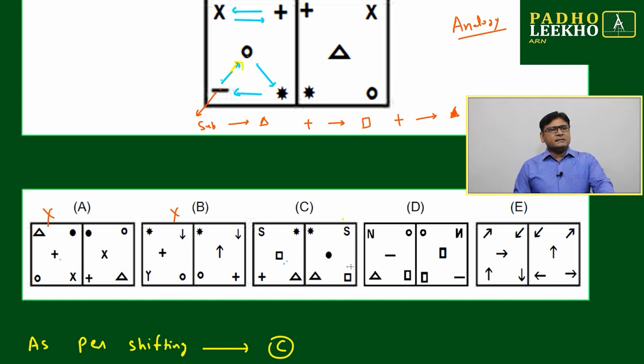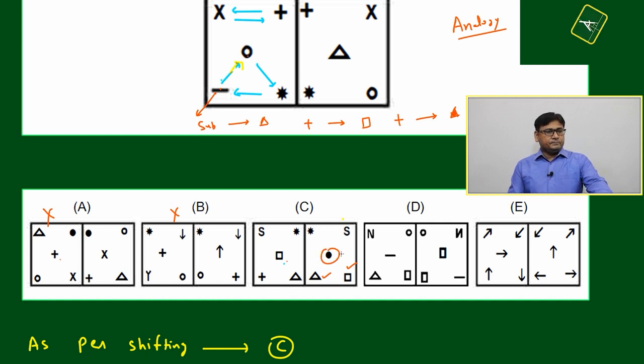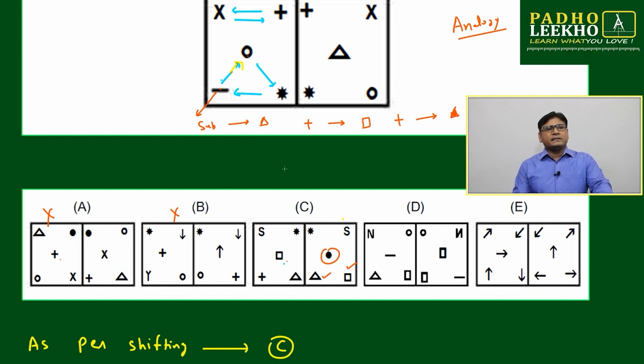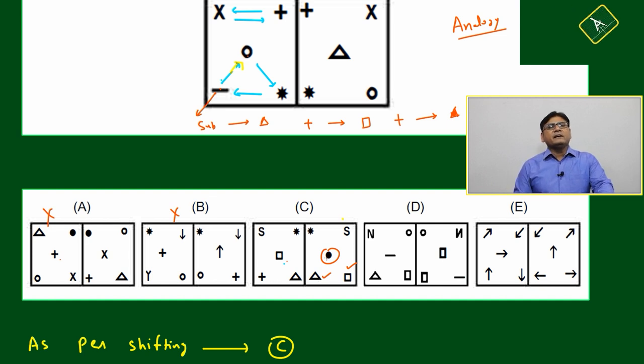This is coming here, yes this is perfectly fine. This is going there, this is also perfectly fine. This plus is going here and making circle. This may be based on this code: like subtraction is making triangle, then this addition or this triangle will make circle. Then here we can say option C is exactly following the pattern.